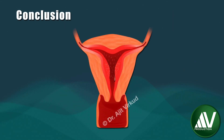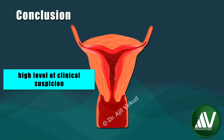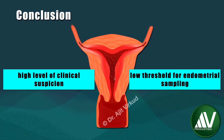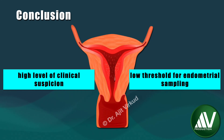In conclusion, a high level of clinical suspicion followed by transvaginal ultrasound and a low threshold for endometrial sampling will help one reach a definitive diagnosis. Early diagnosis of endometrial hyperplasia and intervention is of utmost importance in reducing the prevalence of endometrial cancer.